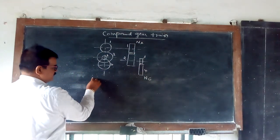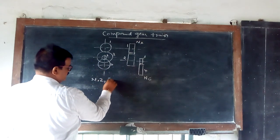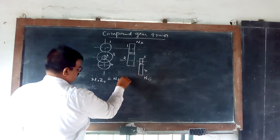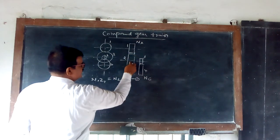Same way, see in the last class also we have seen, N1 Z1 is equal to N2 Z2, equation 1. Now that is the relationship here.